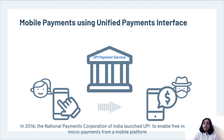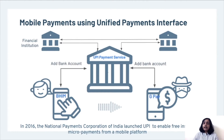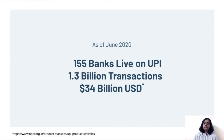In 2016, the National Payments Corporation of India, backed by the Indian government, launched the Unified Payments Interface or UPI to enable free and instant micropayments from a mobile platform. The UPI payment service is a common backend infrastructure that integrates several financial institutions together to facilitate bank-to-bank transactions. Users wanting to transact using UPI can install any one of the UPI-enabled apps from Google Play Store and simply add their bank account to it. As of June 2020, there are 155 banks live on UPI and UPI has done 1.3 billion transactions worth US$34 billion.